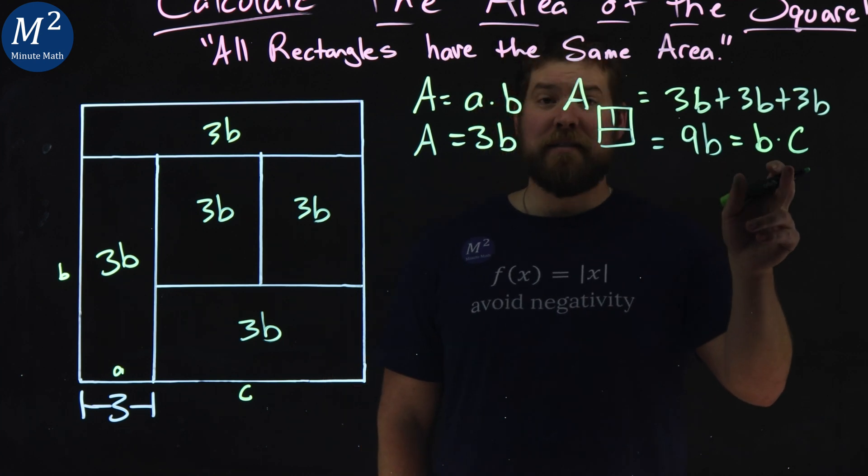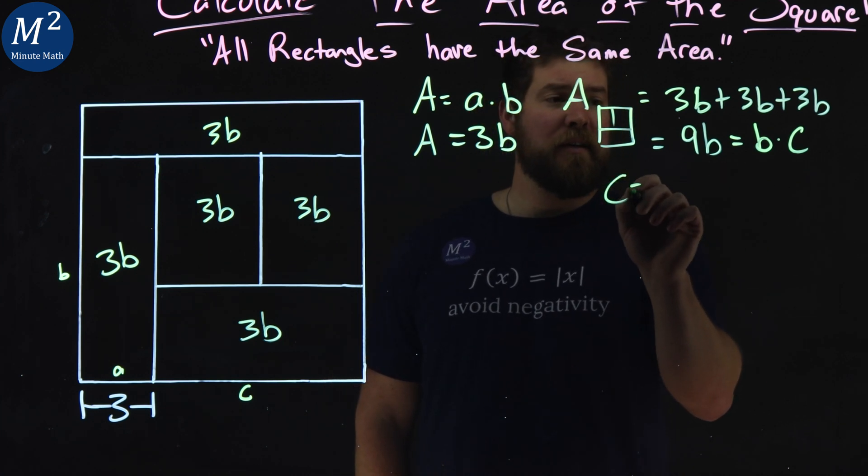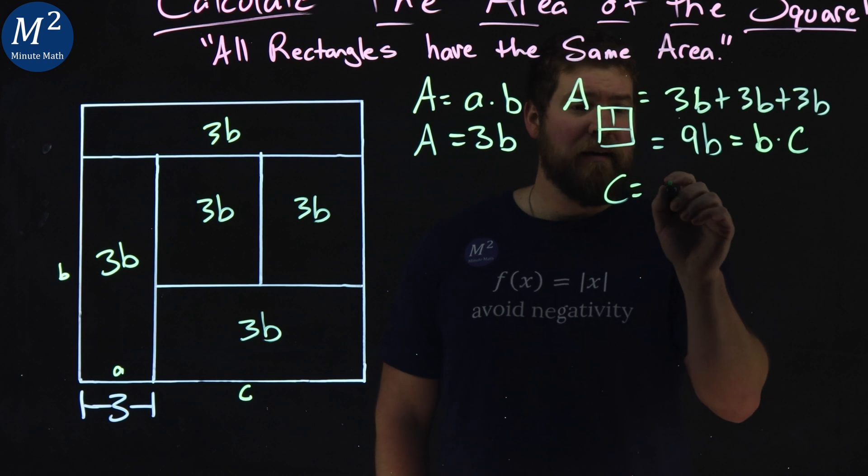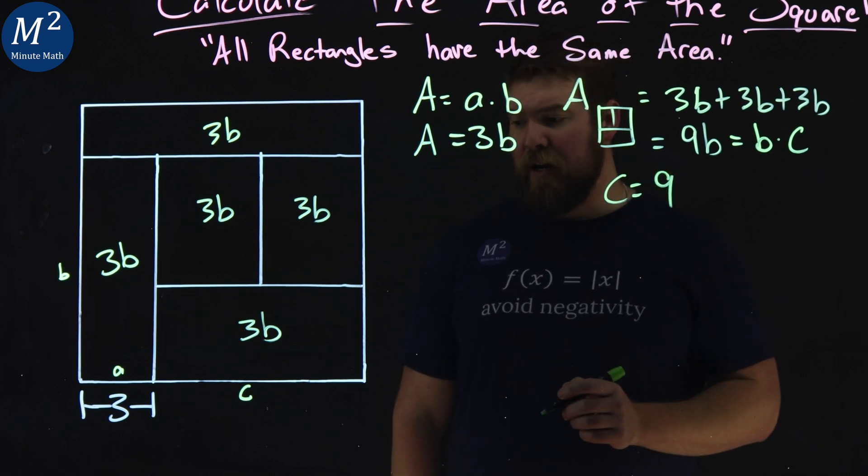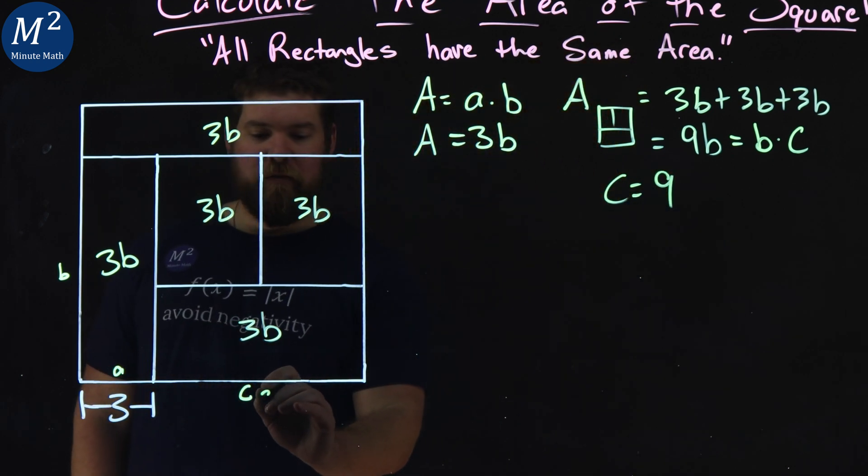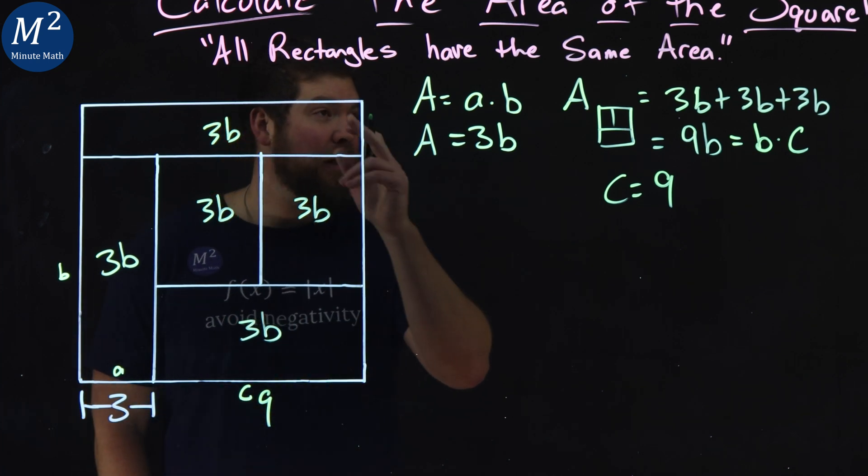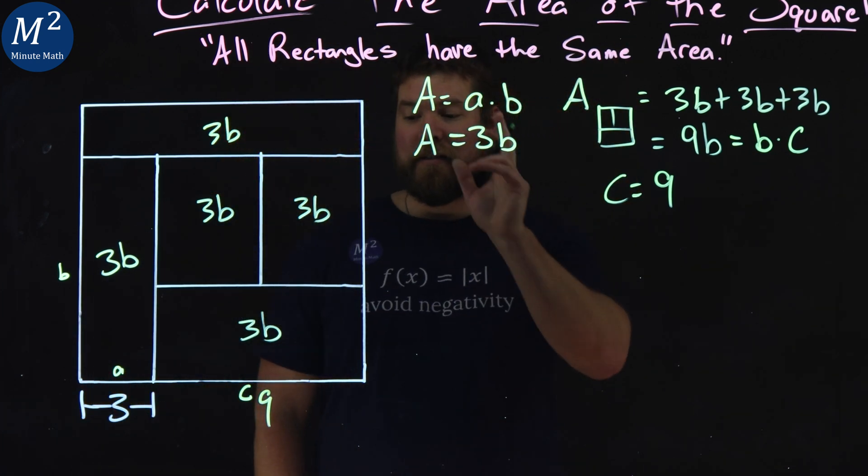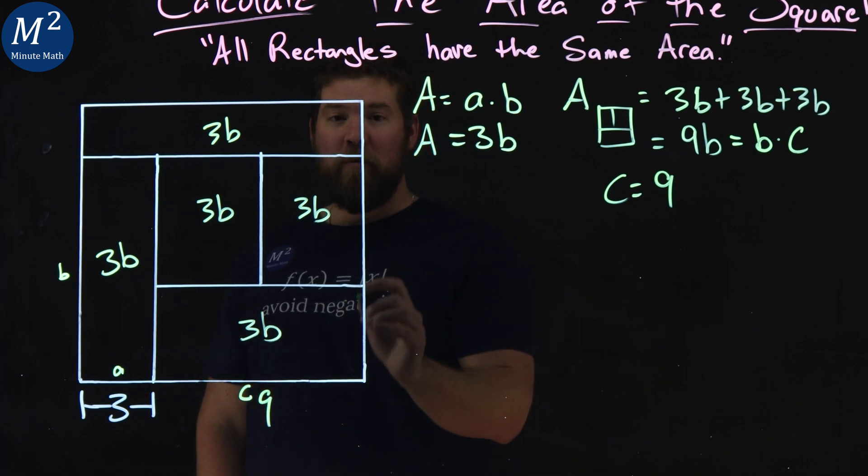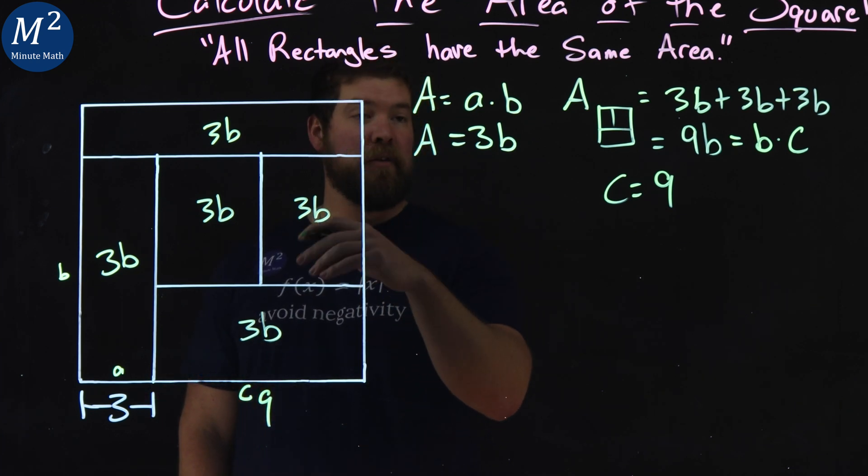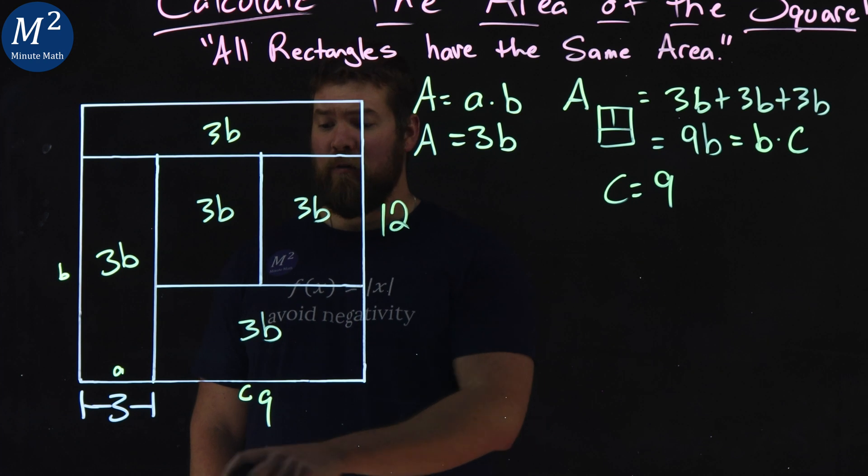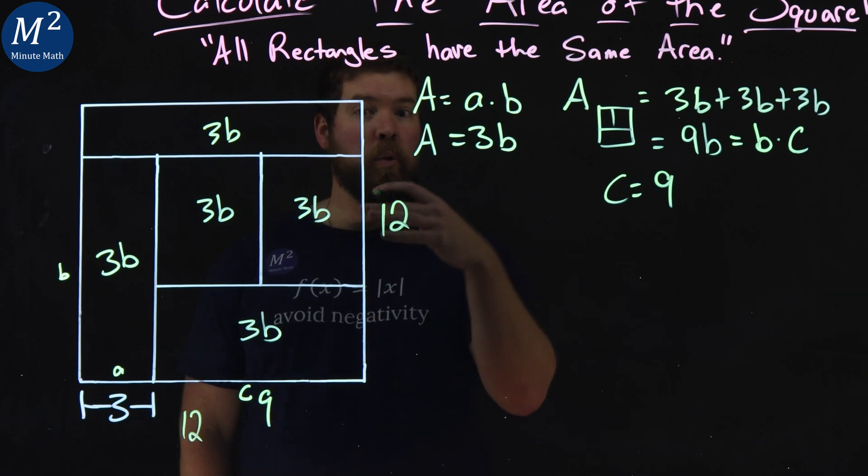Well, from there, we can clearly see what c is equal. C is equal, divide both sides by b, and it's 9. So we have a length here of 9. We have a length of 3. They tell us from the beginning that the whole thing is a square. So the overall length of one of the side lengths, I mean, 3 plus 9, which is 12. And we have a 12 by 12 square.